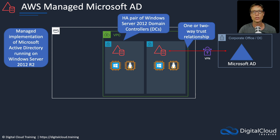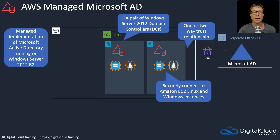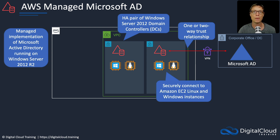When we launch our EC2 instances, whether those are Windows or Linux, we can securely connect those to our managed Microsoft Active Directory. For example, in the hands-on, you're able to join a Windows server or a Windows desktop — such as one running in Amazon Workspaces — to the domain. That means if you have a domain account, you can log on to those computers with it.